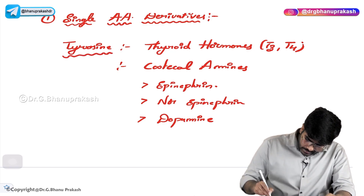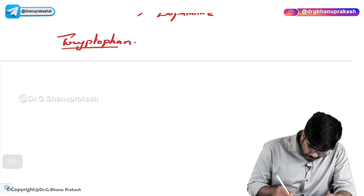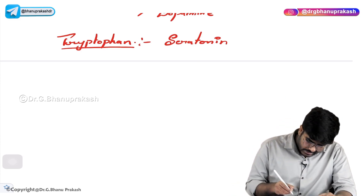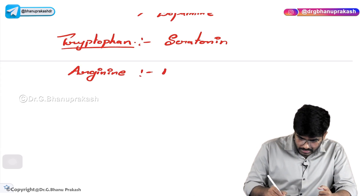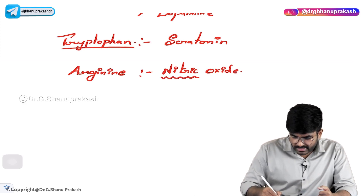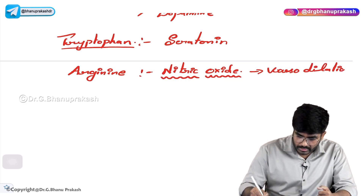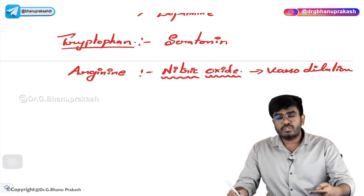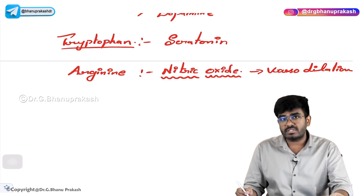There is one more amino acid called tryptophan, from which serotonin is produced. There is also the amino acid arginine, from which nitric oxide is produced. Nitric oxide causes vasodilation. So nitric oxide is derived from arginine, serotonin is derived from tryptophan, and tyrosine gives rise to thyroid hormones as well as catecholamines. That completes the first class — single amino acid derived hormones.